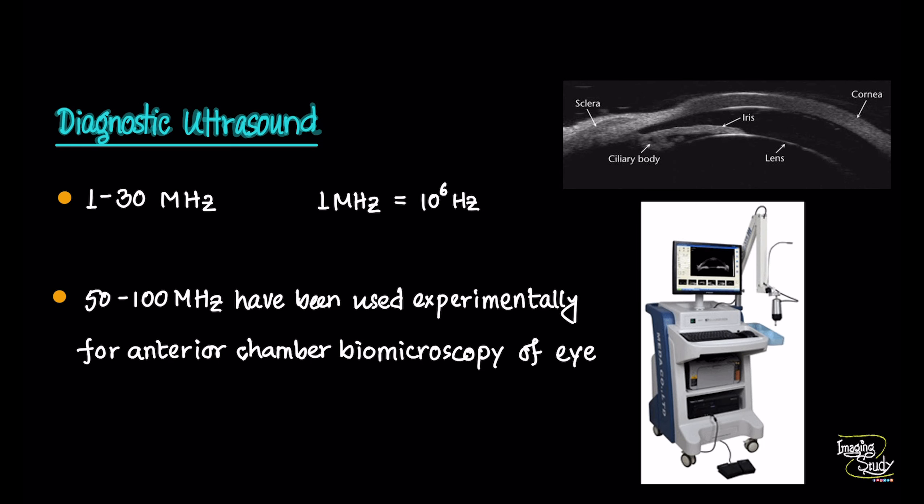Now let's talk about diagnostic ultrasound — what frequency do we use to diagnose a disease? Our diagnostic range has changed with time. Right now, the diagnostic frequency range of ultrasound is 1 to 30 megahertz. Megahertz — that is 10 to the power of 6 hertz — is a huge number. Nowadays ultrasound has been divided into several sub-specialties.